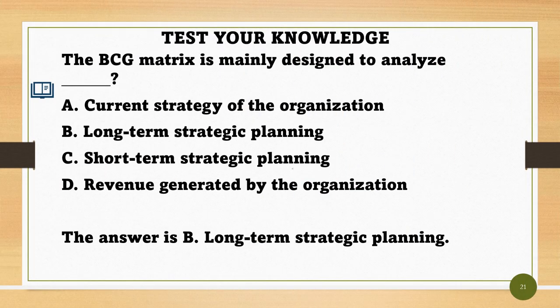The BCG matrix is mainly designed to analyze: A. Current strategy of the organization. B. Long-term strategic planning. C. Short-term strategic planning. D. Revenue generated by the organization. The answer is B — Long-term strategic planning.